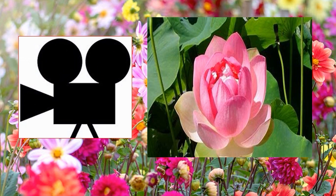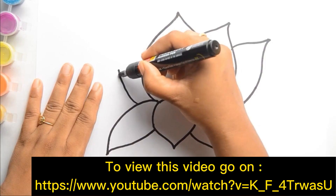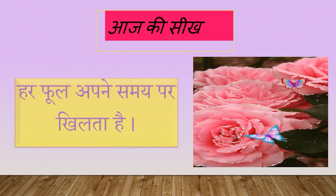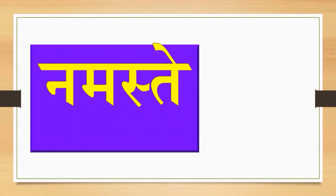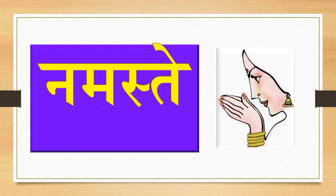चलिए बच्चों, एक वीडियो देखते हैं — आप कमल का चित्र बनाएंगे और उसमें रंग भरेंगे। कहूंगी, हर फूल अपने समय पर खिलता है। आपको कभी भी निराश या उतावला नहीं होना चाहिए — सही समय आने पर आपको सब कुछ मिलेगा। ठीक है, बच्चों। अच्छा बच्चों, आज का पाठ यहीं समाप्त होता है। आशा है कि आज की कक्षा आपको अच्छी लगी होगी। नमस्ते बच्चों।